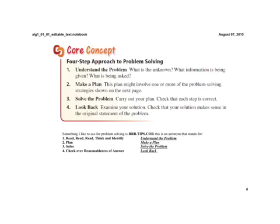Now we're going to look at the core concept of solving real life problems. We understand the problem. What is the unknown? What information is being given? What is being asked? And so on. That's the top part of this slide is what's in your journal. The bottom part down here is something that another teacher and I created years ago. It's rrr.tips.core. And it's just an acronym that we use to recall that read, read, read, think, and identify. And so we have to read the problem as many times as we need to, to think about it and identify what we need to know in order to understand the problem. Then we're going to make the plan. Then we're going to solve it. And then probably the most important part is to check over the reasonableness of the answer. And if we can do those things, then you're usually going to be pretty successful with any type of problem that you encounter.